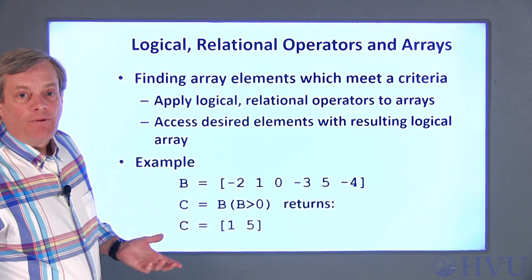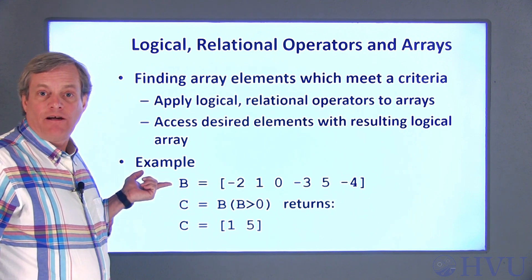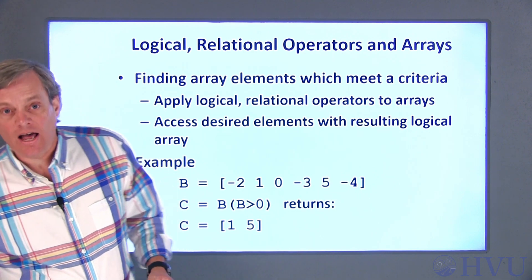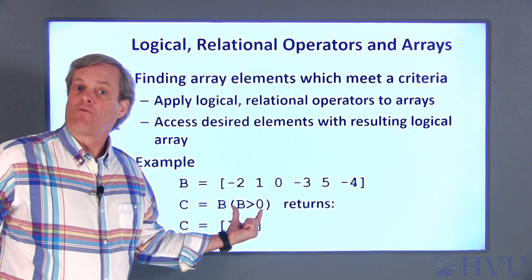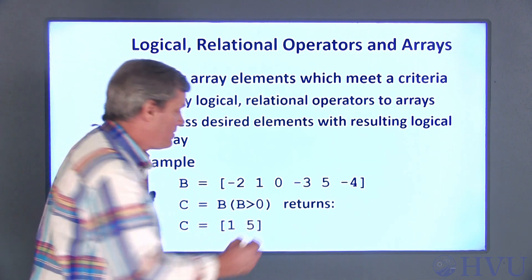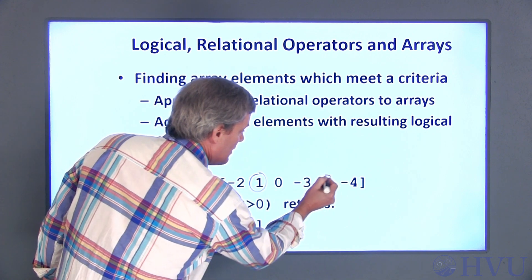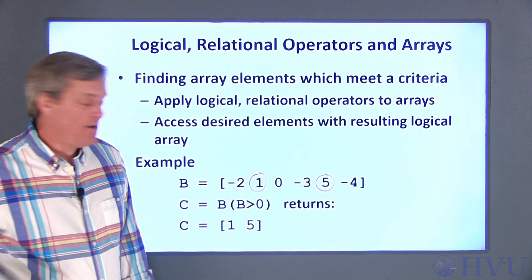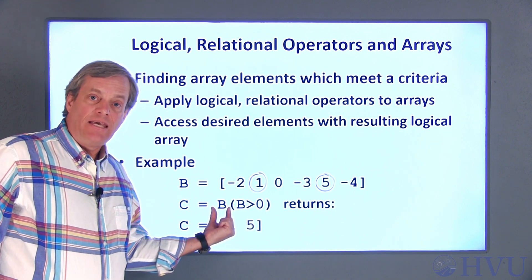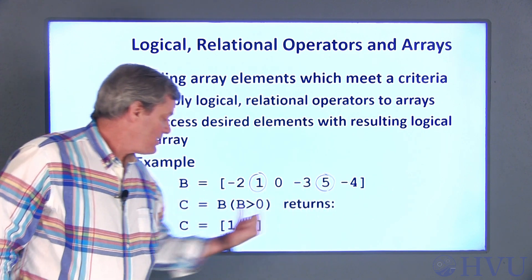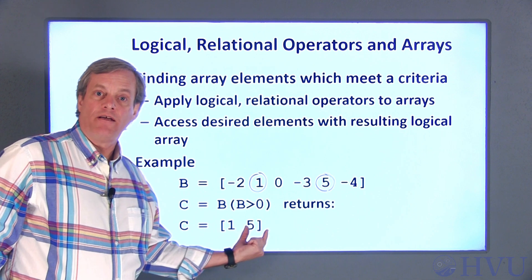For example, I have this array, B, in my workspace. The RELATIONAL operation, B greater than 0, returns an array with 1s in locations to positive values of B, there and there. If I use that array of 1s and 0s as an argument to B, I extract the values here and C becomes 1 and 5.